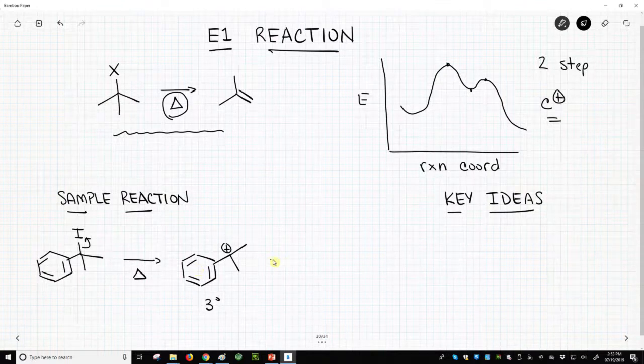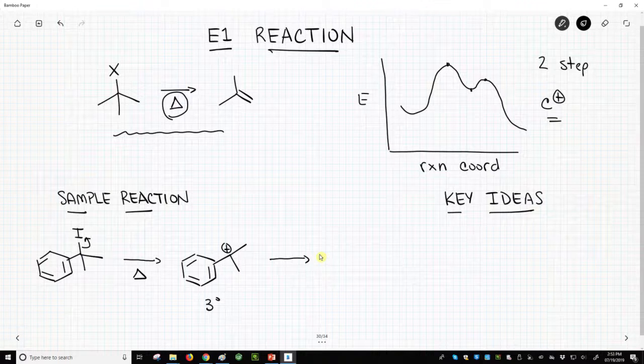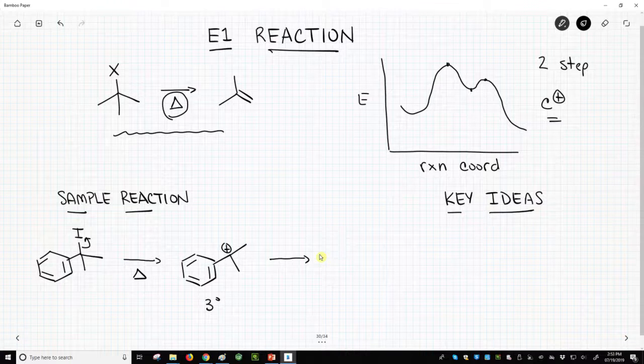Now what's going to happen to our carbocation? In an E1 reaction, we're going to form our double bond, and now it starts to look a little bit like an E2 reaction. In the E2 reaction, we removed a beta hydrogen. Beta? Beta to what? Well beta to the carbocation.